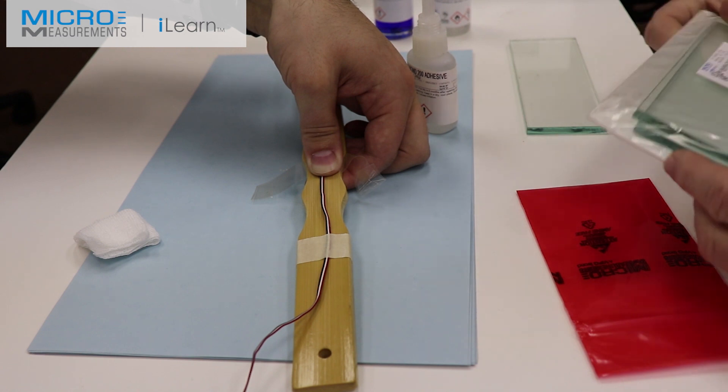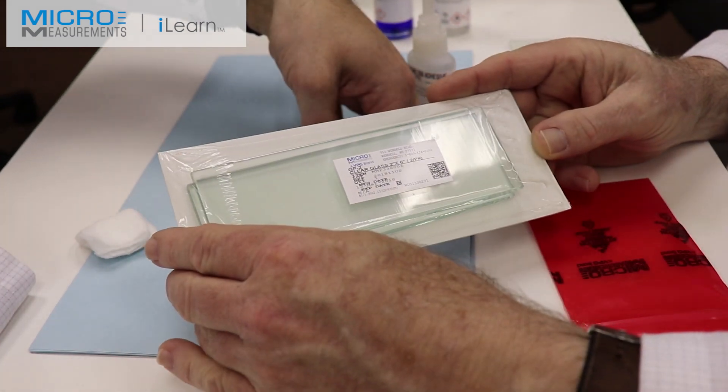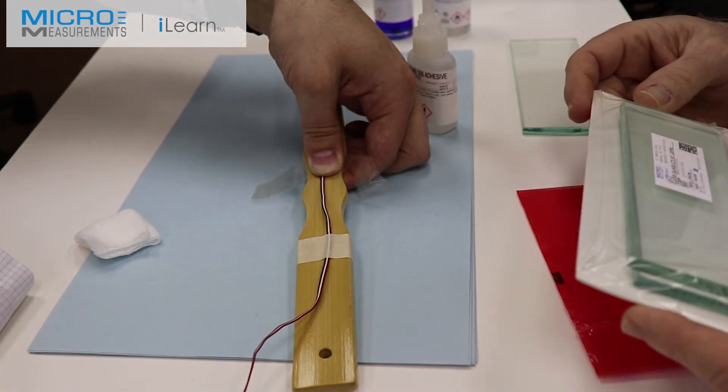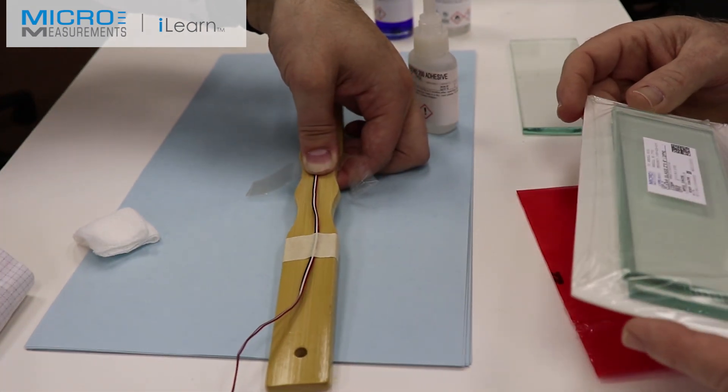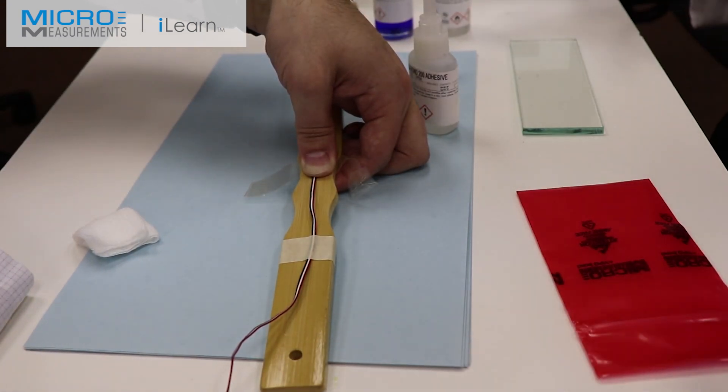By the way Colin, I forgot to mention, that glass plate you were using? Micro Measurements now sells that as GP2. Two pieces of glass, so if you don't have a supply of glass close by or whatever reason you want to buy it from us, we will sell you those glass plates for gauge staging.